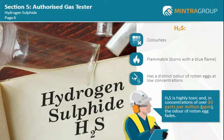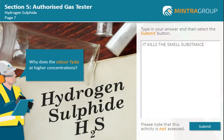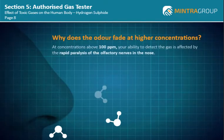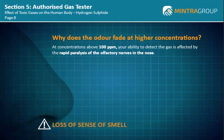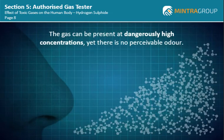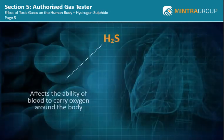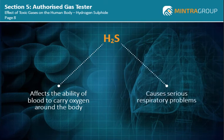H2S is highly toxic and in concentrations of over 30 ppm, the odour of rotten egg fades. At concentrations above 100 ppm, your ability to detect the gas is affected by the rapid paralysis of the olfactory nerves in the nose, leading to a loss of your sense of smell. This means that the gas can be present at dangerously high concentrations yet there is no perceivable odour. H2S affects the ability of blood to carry oxygen around the body, including the brain, and causes serious respiratory problems.